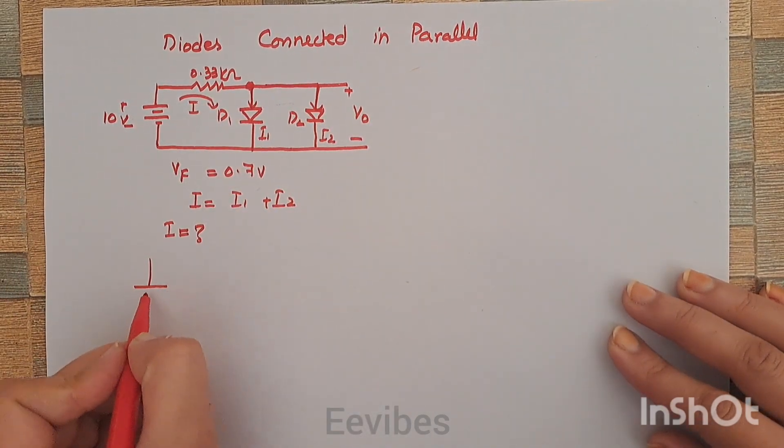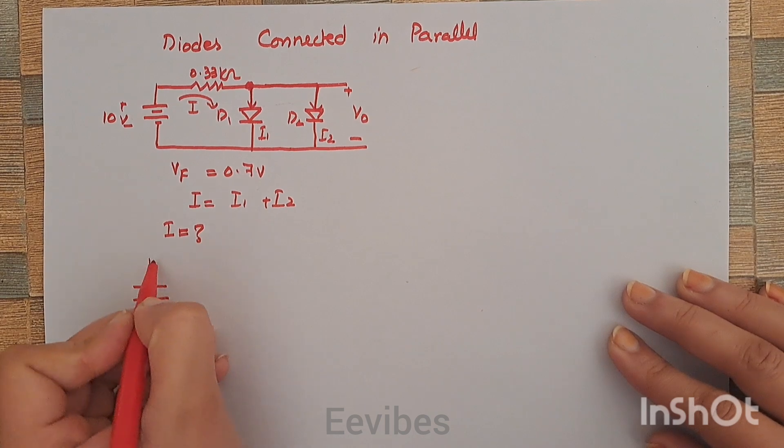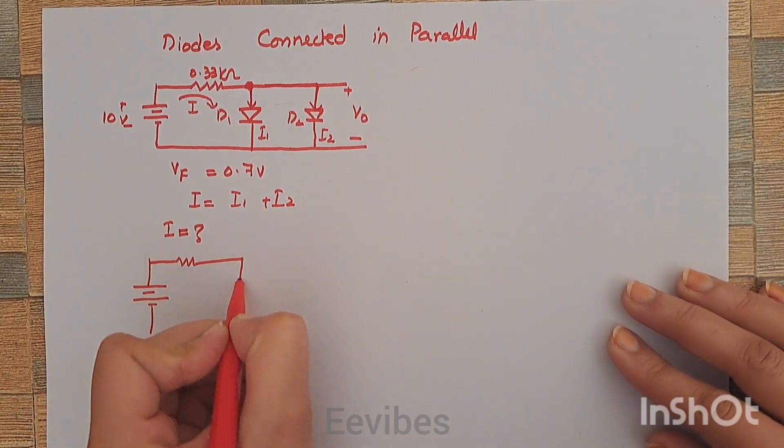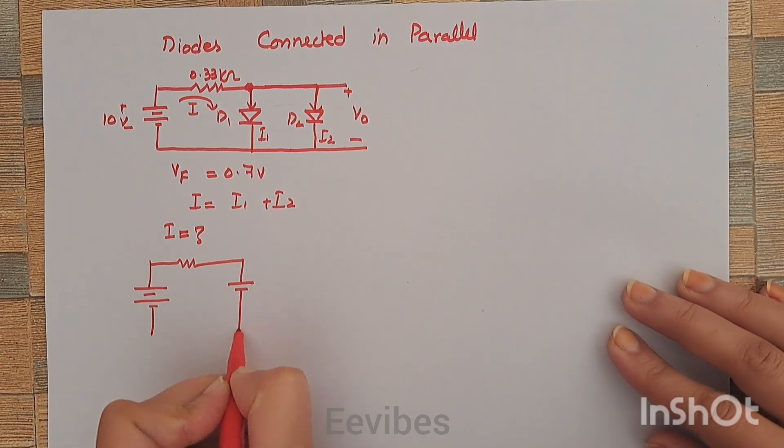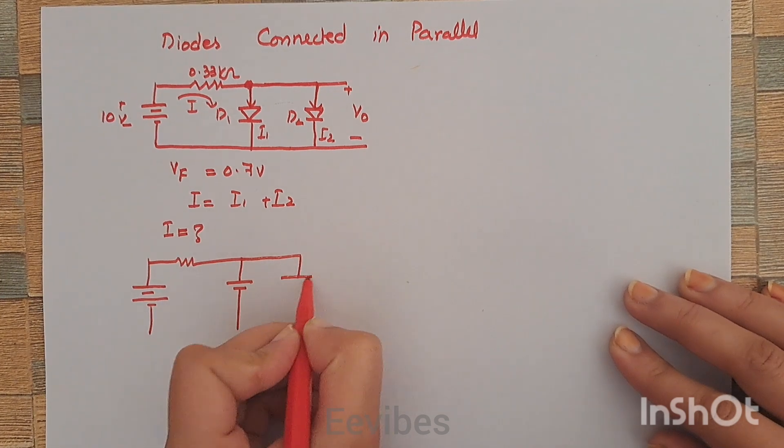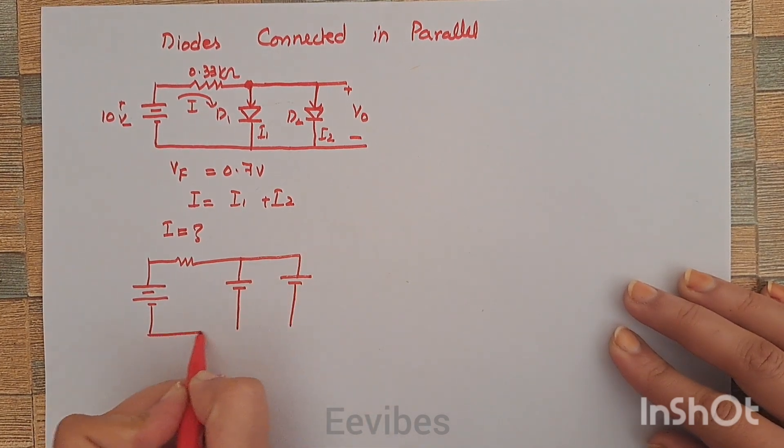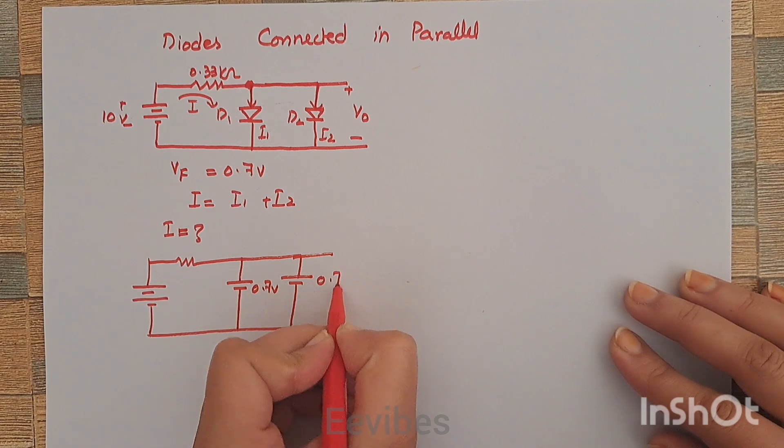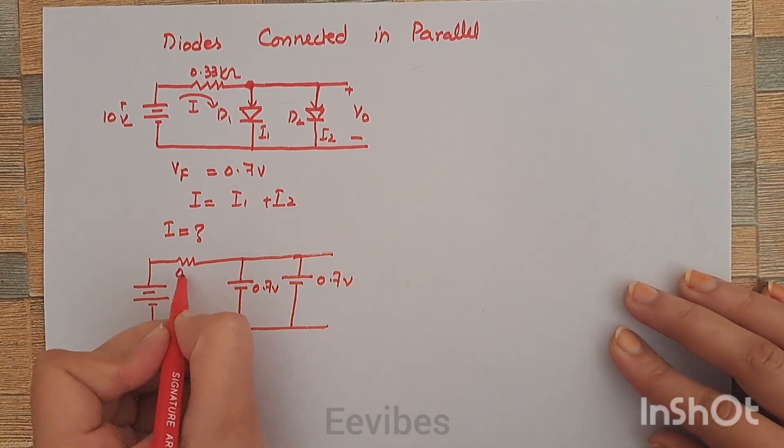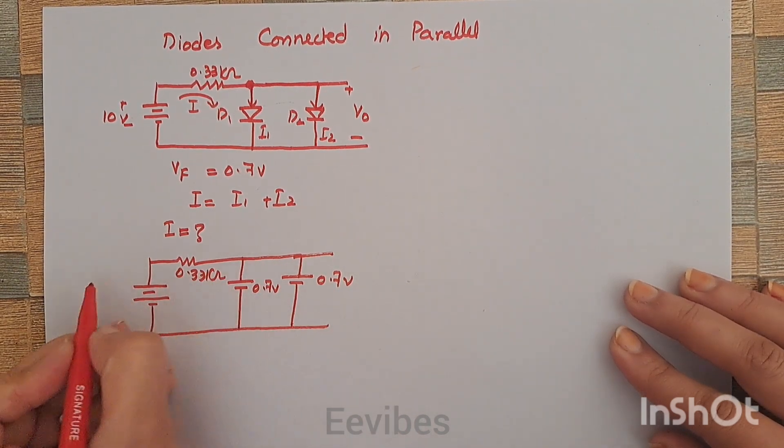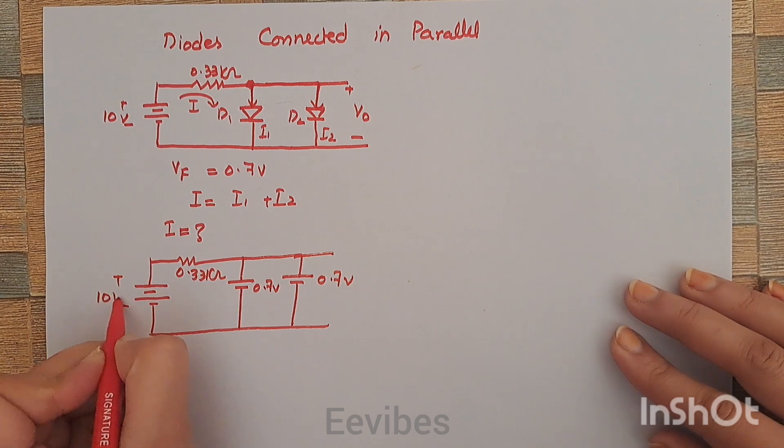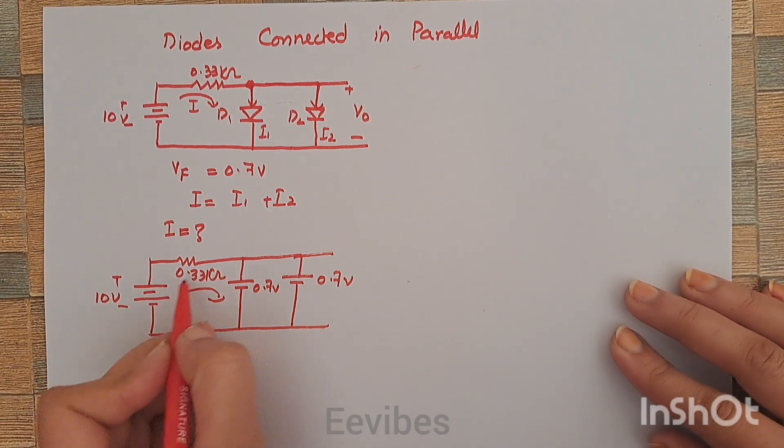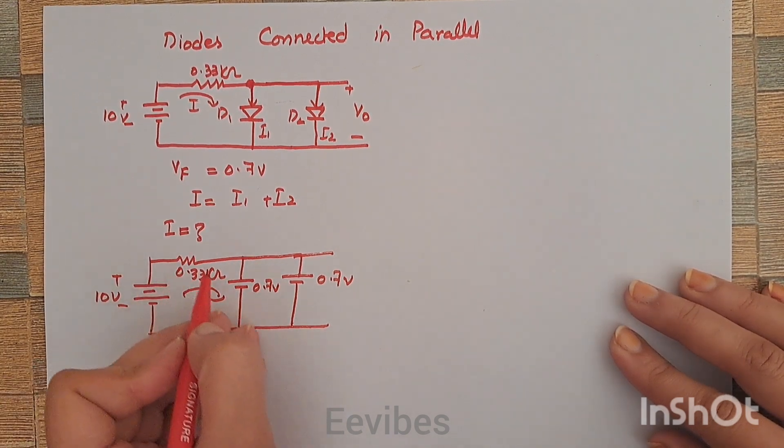When we draw the equivalent circuit in this particular case, we can replace them with a 0.7 volt battery. So this is 0.7 volts, here you'll have 0.7 volts, 0.33 kilo-ohms as is, and here the plus 10 volts. When you apply KVL in this first loop...